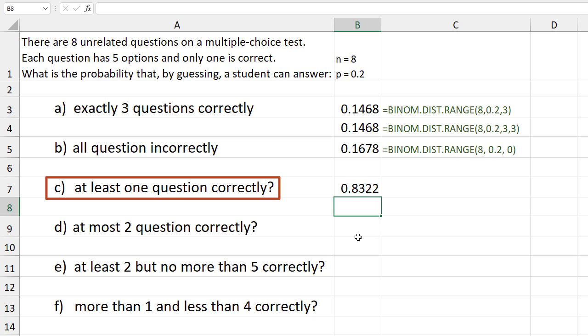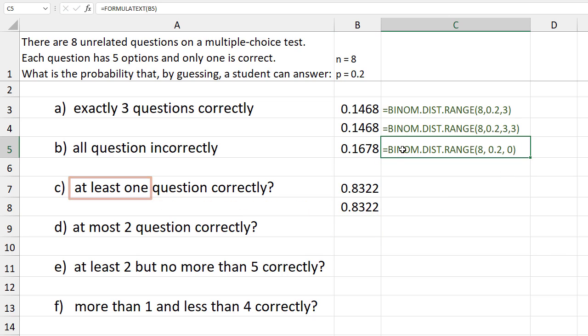We can also use the fact that the probability of at least 1 equals 1 minus probability of 0. So we can do 1 minus the result from part b. I'll copy the formula text function from b to c.